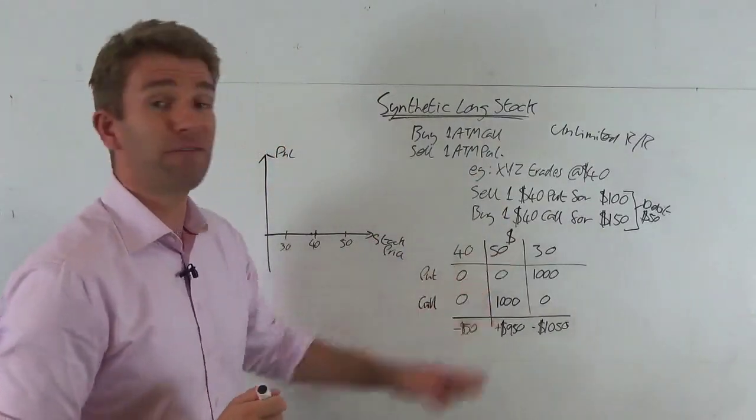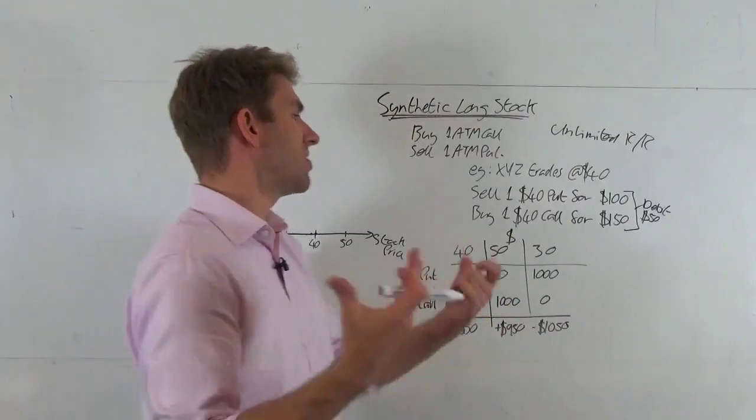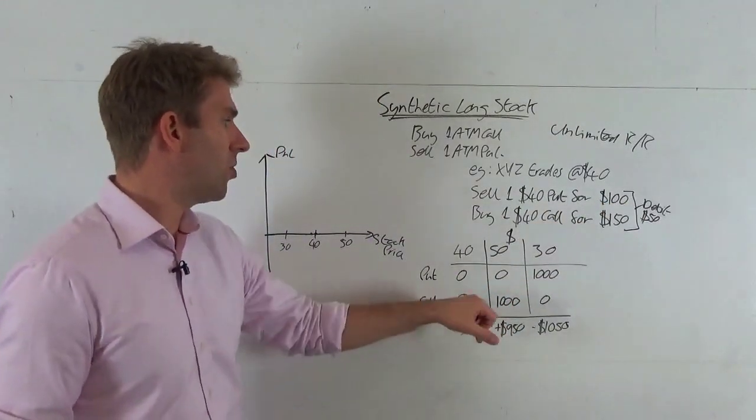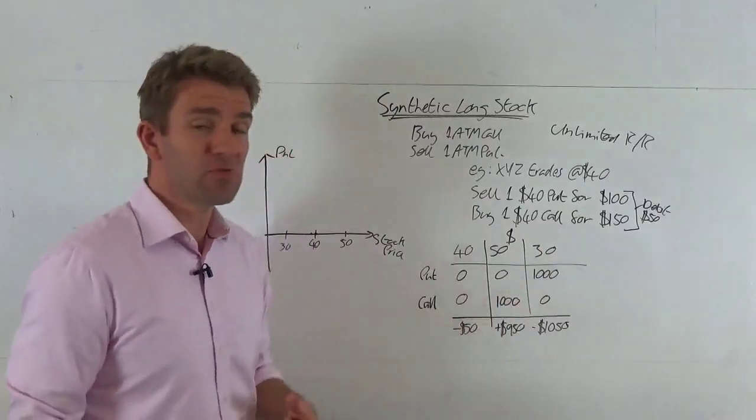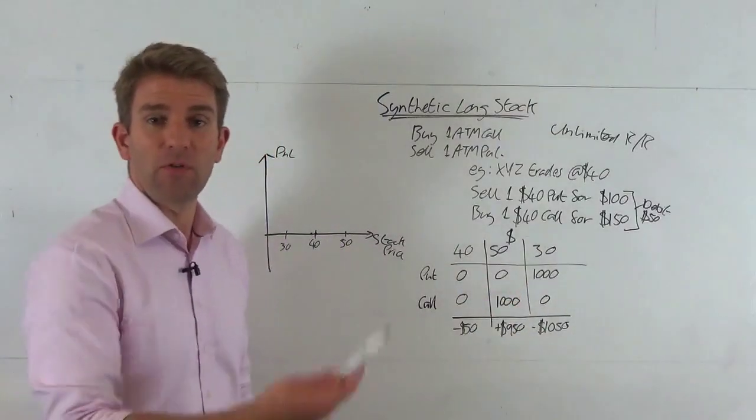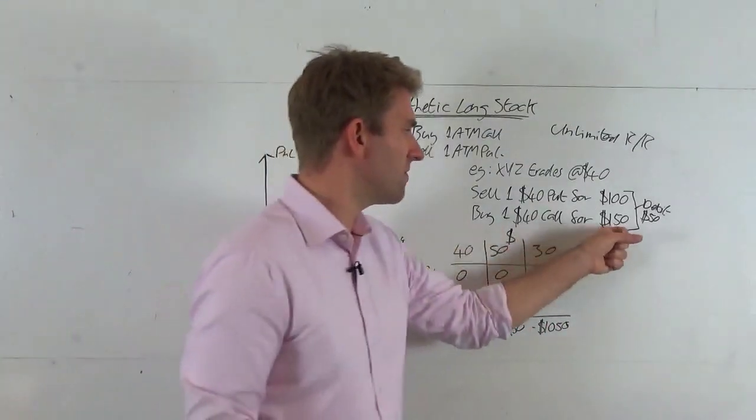What about $50? Great, we've made $10, that's what we wanted. What happens to the put? Well, the put expires worthless, that's okay, we made $100 on that. What about the call? Well, the call now has $1,000 worth of value because it's gone up by $10 and we've got one contract, 100 shares times $10 is $1,000.